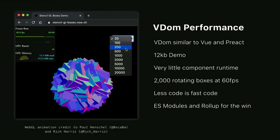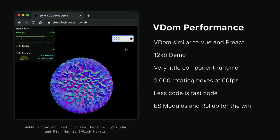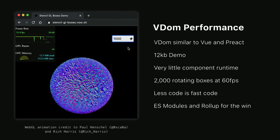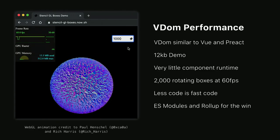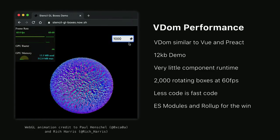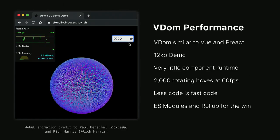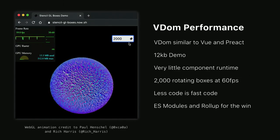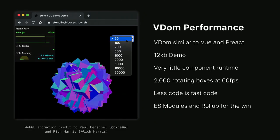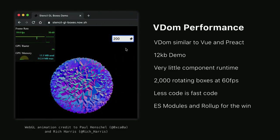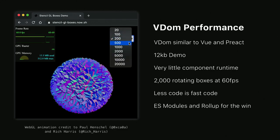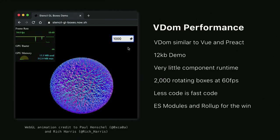If you've been on Twitter recently, you may have seen this demo. It's showing that Stencil's VDOM can easily take on 60 frames per second. What I really think is cool about this demo is that the entire size of it is 12 kilobytes, and that's mainly because it uses ES modules from Three.js. Credit goes to React Three and Svelte for creating this demo, but I couldn't help but wonder what Stencil would do with this same example.